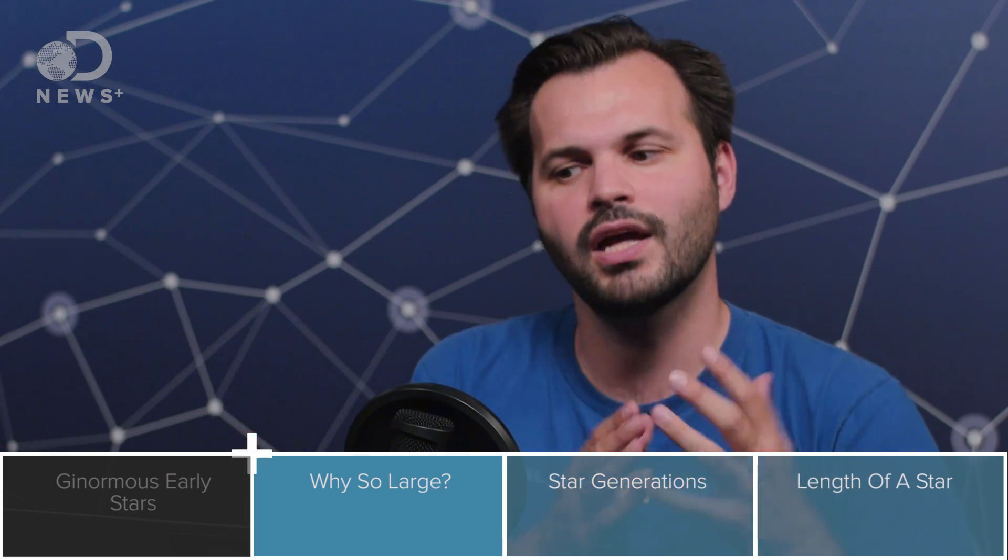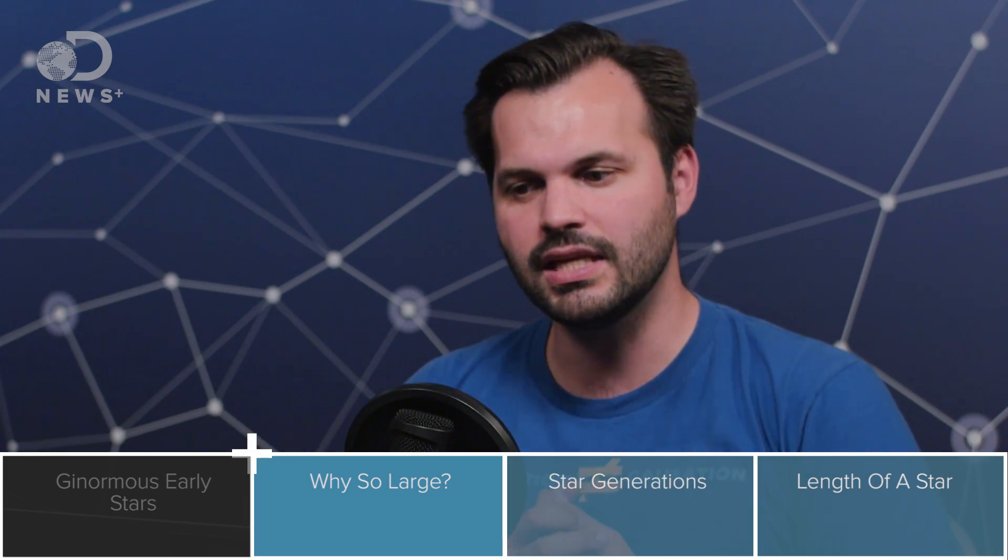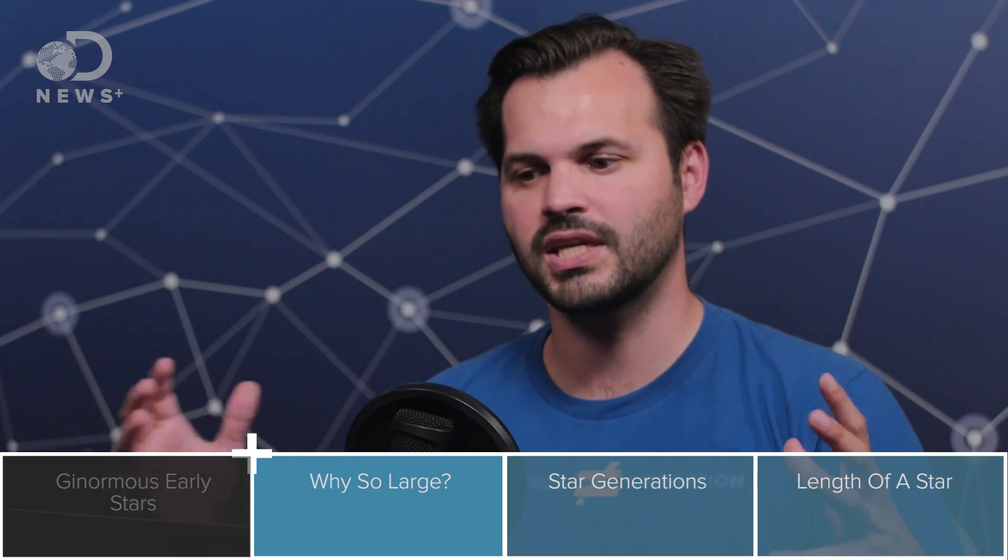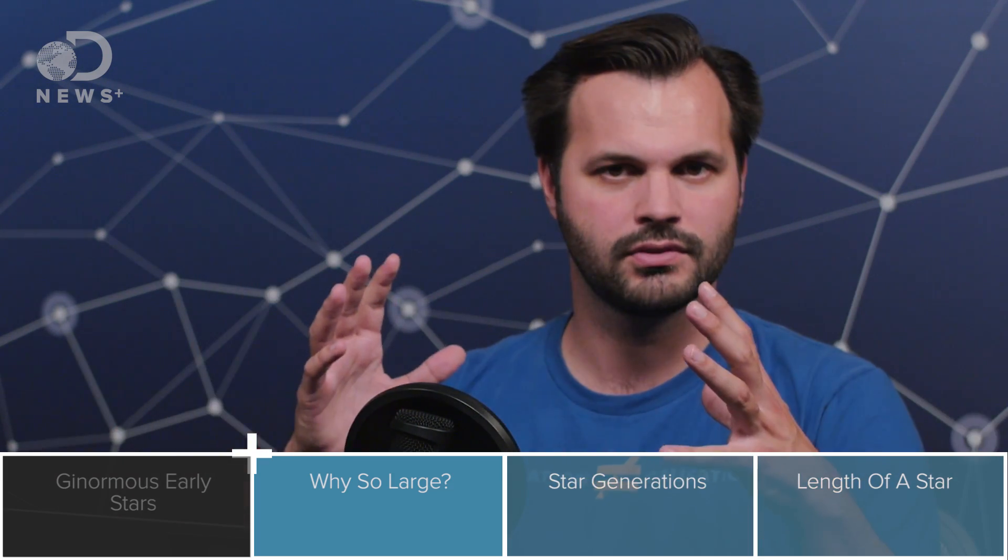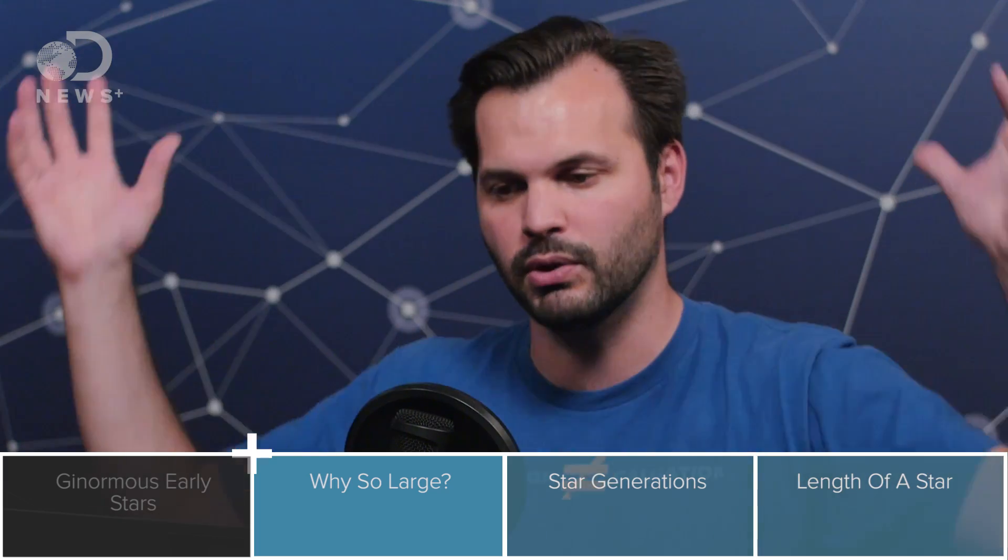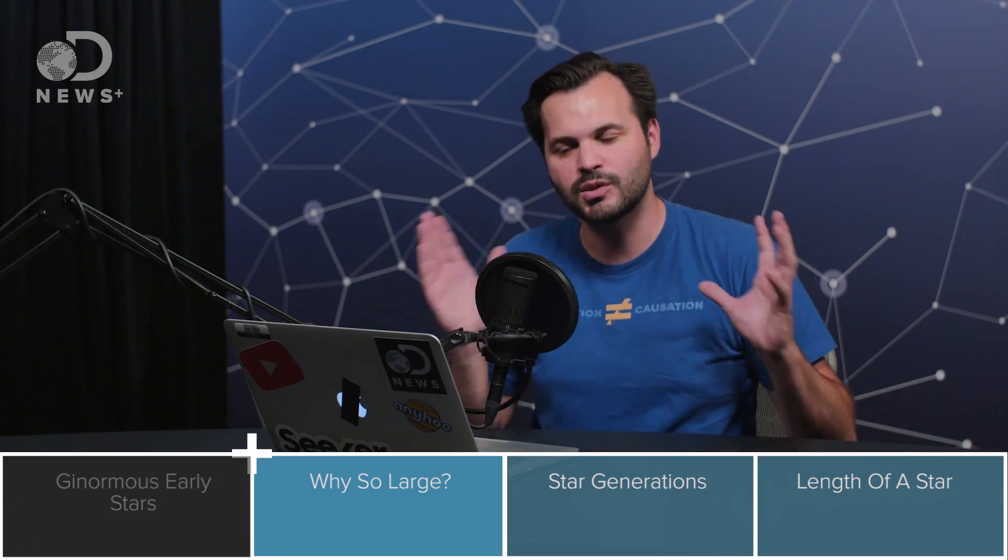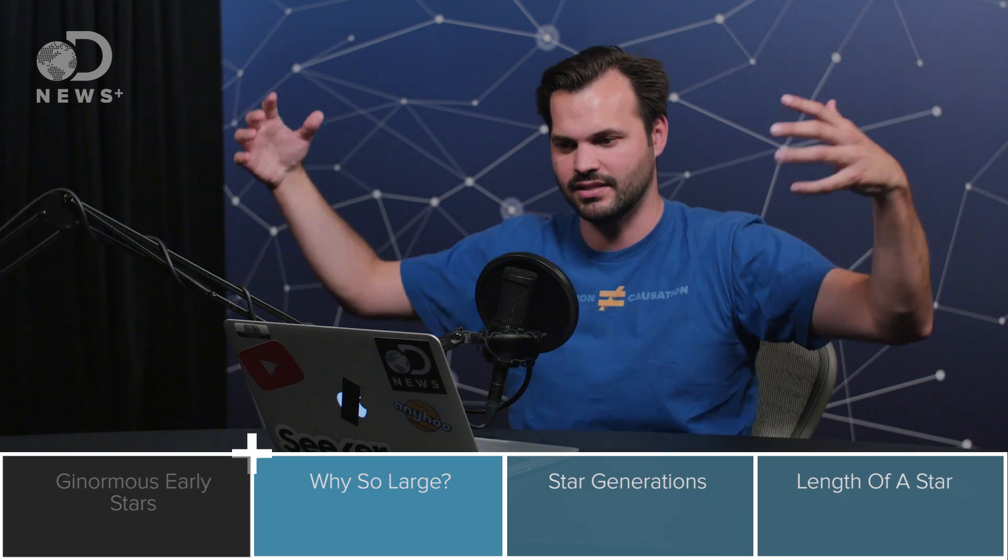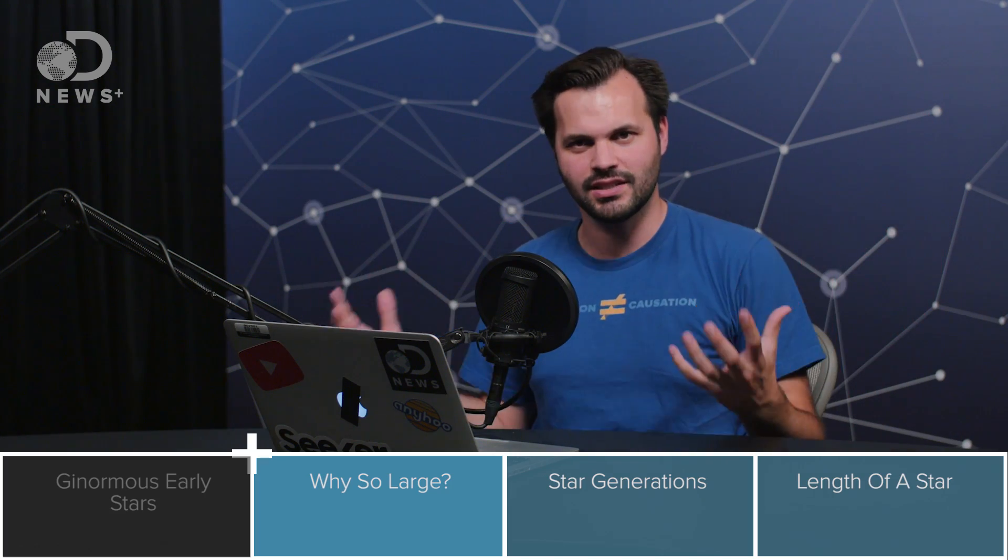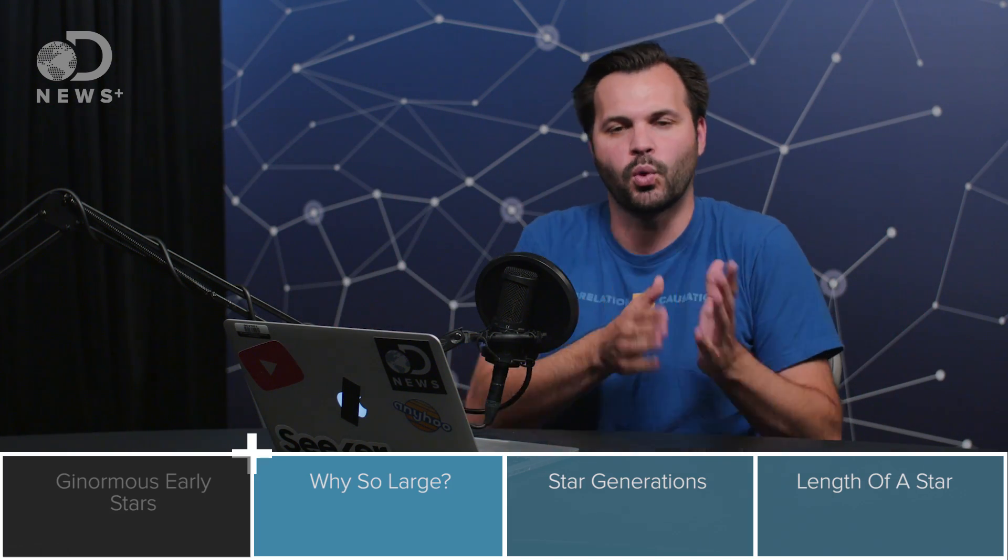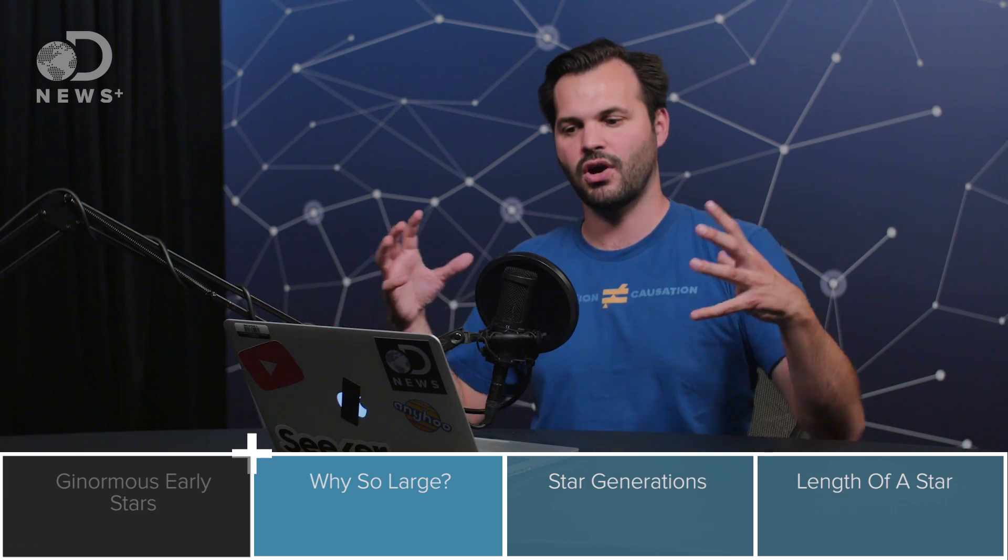Because for a star like our sun, you need heavy elements like carbon. It helps keep the collapsing gas cool enough so it doesn't expand too much. The star doesn't blow itself out. So basically, if the heavier elements weren't there, the star would expand to these massive sizes. And that was exactly the case in the early universe. Those heavier elements weren't there yet, so the stars got bigger.